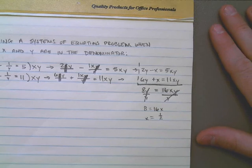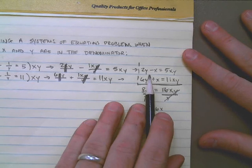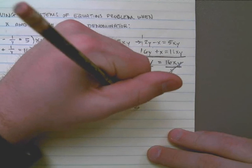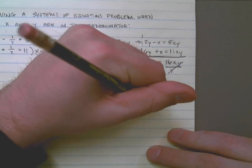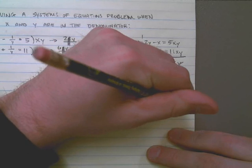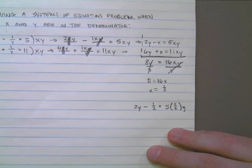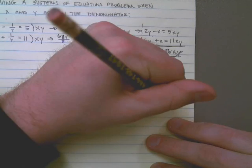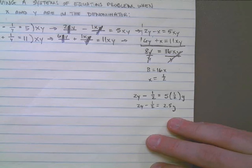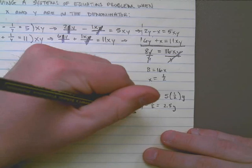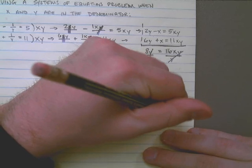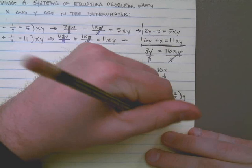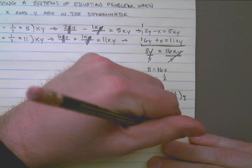Once I get that, I can substitute into, say, this equation right here. If I know that x is 1 half, I know then that 2y minus 1 half is equal to 5 times 1 half times y. That tells me then that 2y minus 1 half must be equal to 2 and a half y. If I subtract 2y from both sides, I get negative 1 half is equal to 1 half of y, which means y must be negative 1.